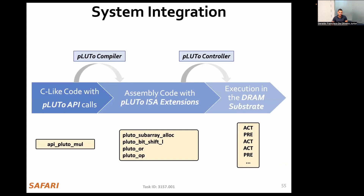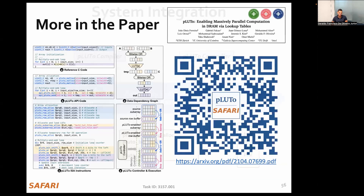Next, I'm going to briefly talk about Pluto system integration. Pluto system integration is composed of Pluto APIs — C-like code that the programmer uses to invoke a given lookup operation — Pluto ISA extensions, which are low-level assembly code generated by the Pluto compiler when translating Pluto API calls, and DRAM commands, which the Pluto controller generates based on the Pluto ISA extensions to execute an in-DRAM lookup query operation. You can find more details about our proposed system integration stack in our paper.